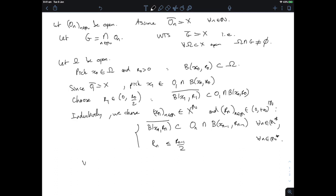So of course inductively we have that rₙ is going to be smaller than r₀ divided by 2ⁿ for all n.